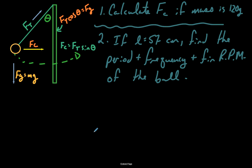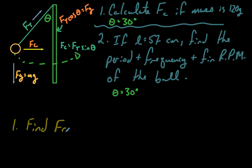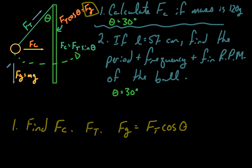Theta is set to 30 degrees — that's necessary information. For Part 1, let's find Fc. To find Fc we need Ft, but we can't directly measure it. However, we know Fg equals Ft·cosθ. We should be able to work out Fc from this.